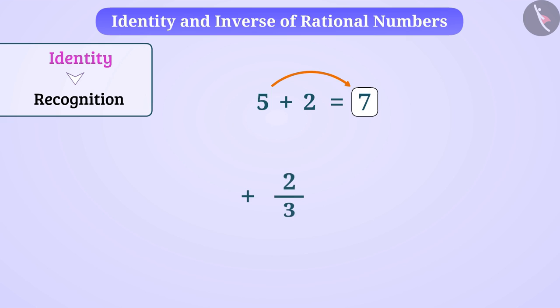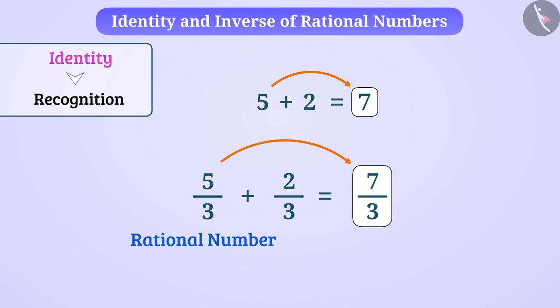Similarly, adding 2 by 3 in rational number 5 by 3 changes its value to 7 by 3. Identities of numbers do not change in some special cases.